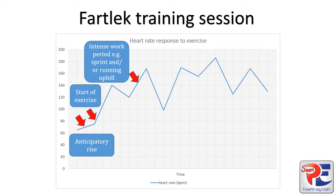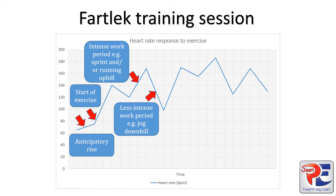Because we've looked at parts of the heart rate that go up or increase, I now want to look at this section, which shows the heart rate reducing. Again, to interpret this, I want to give meaning as to why I think this is happening. So based on my knowledge of fartlek training, this could have happened because the exercise is less intense, such as changing from a sprint uphill to maybe a downhill jog.